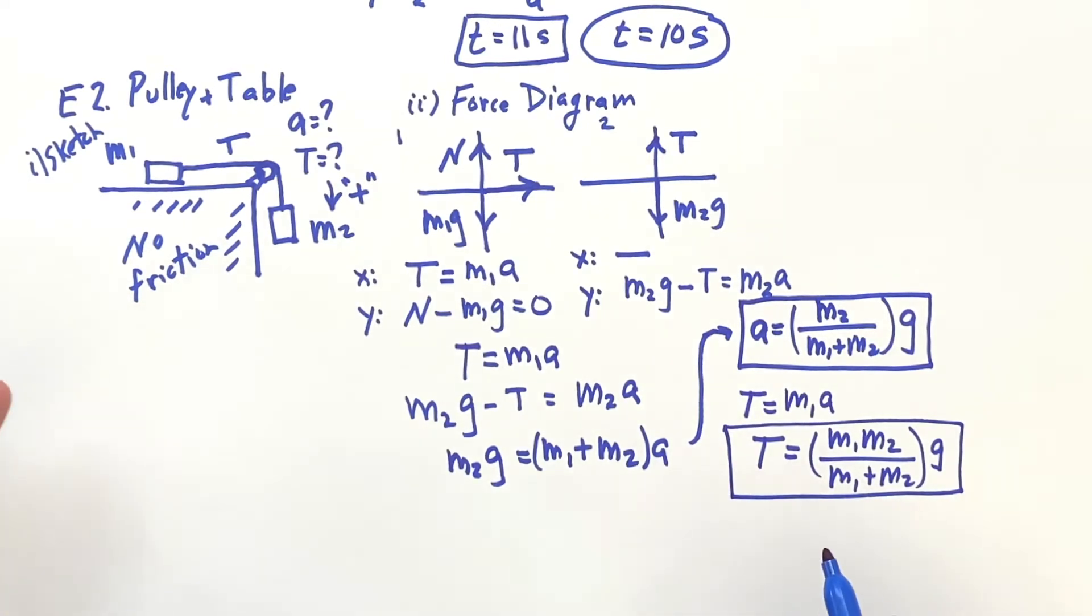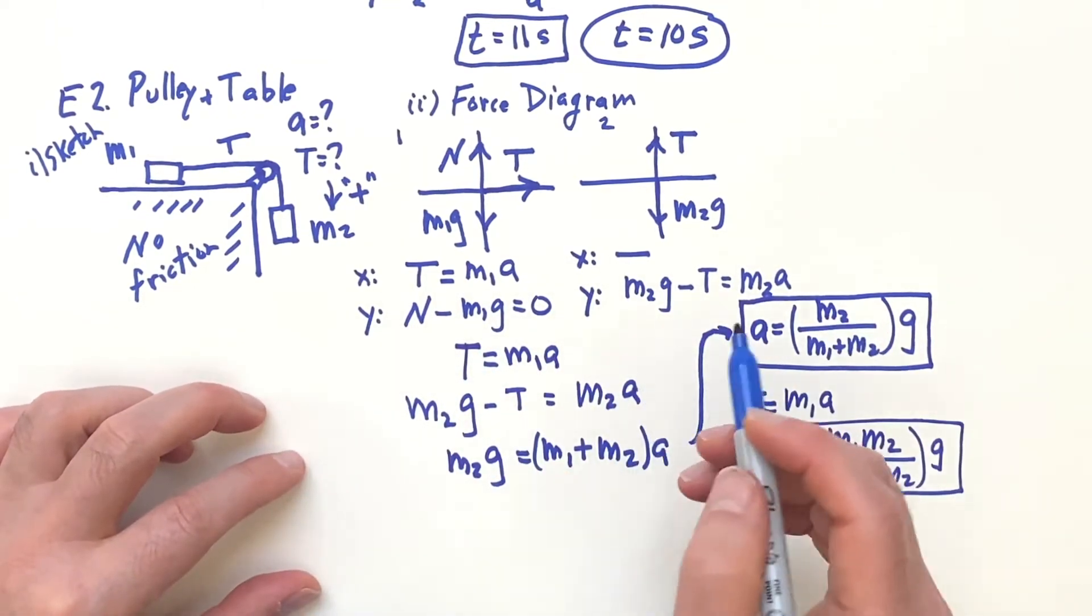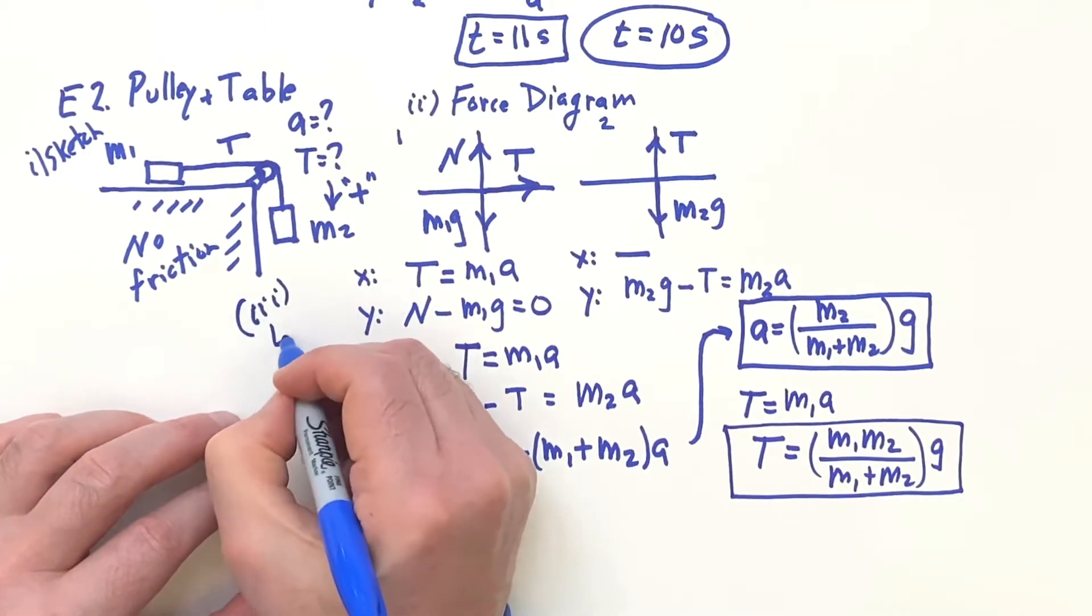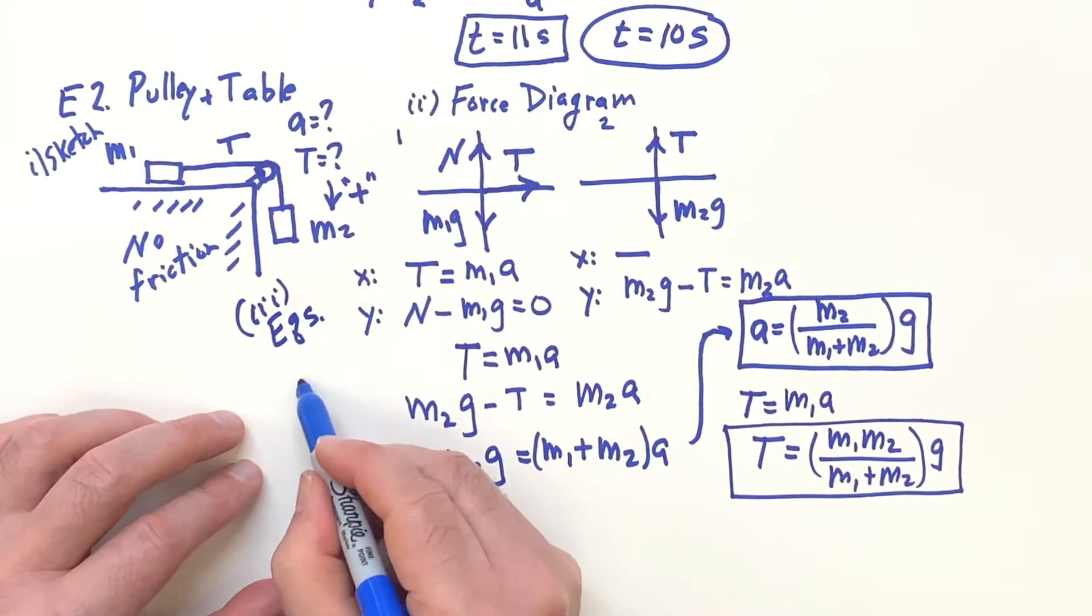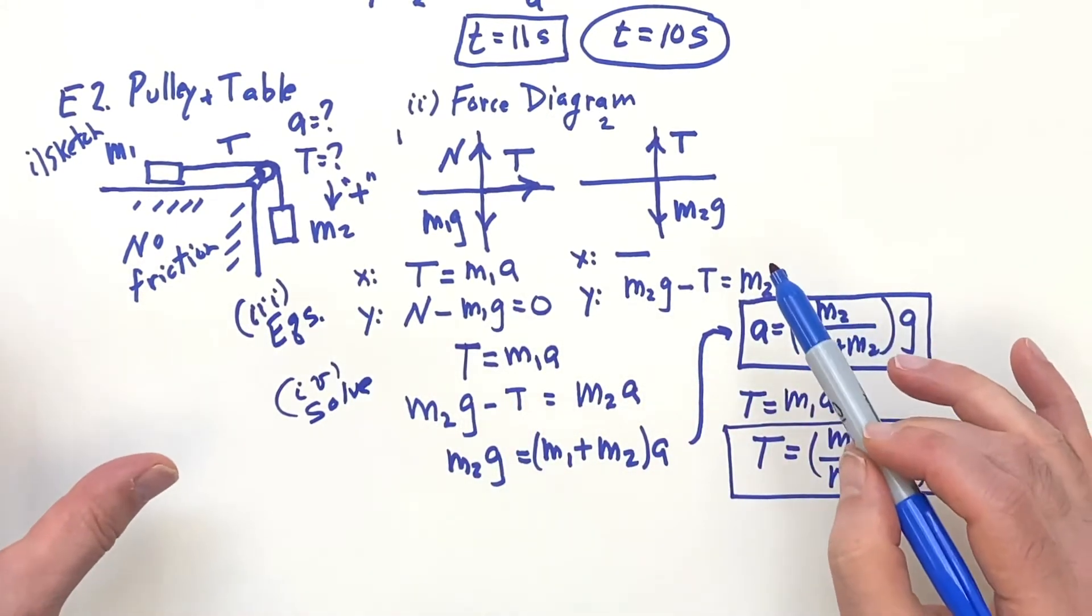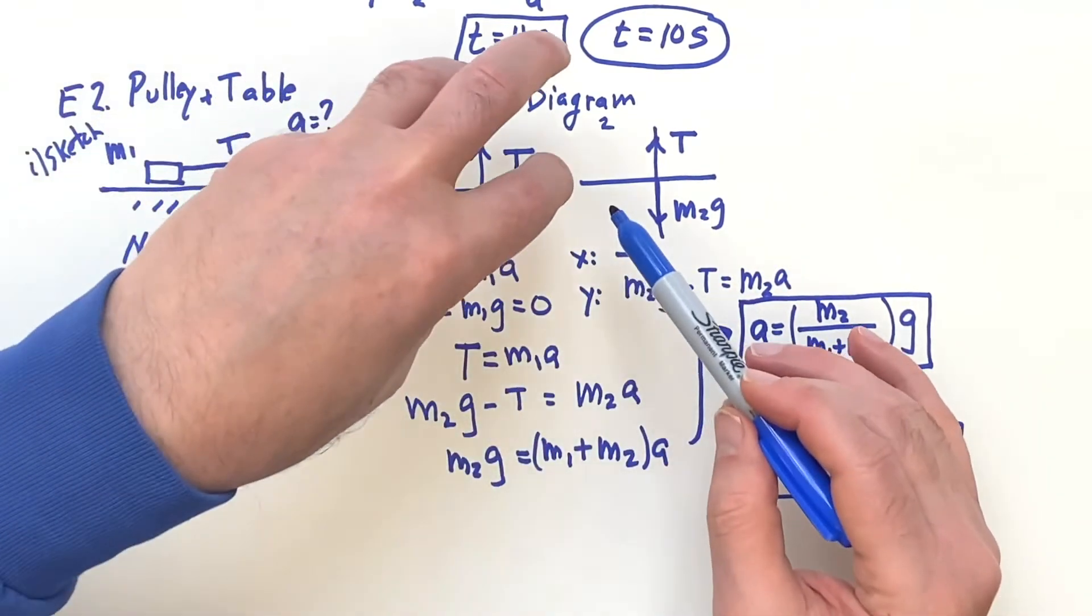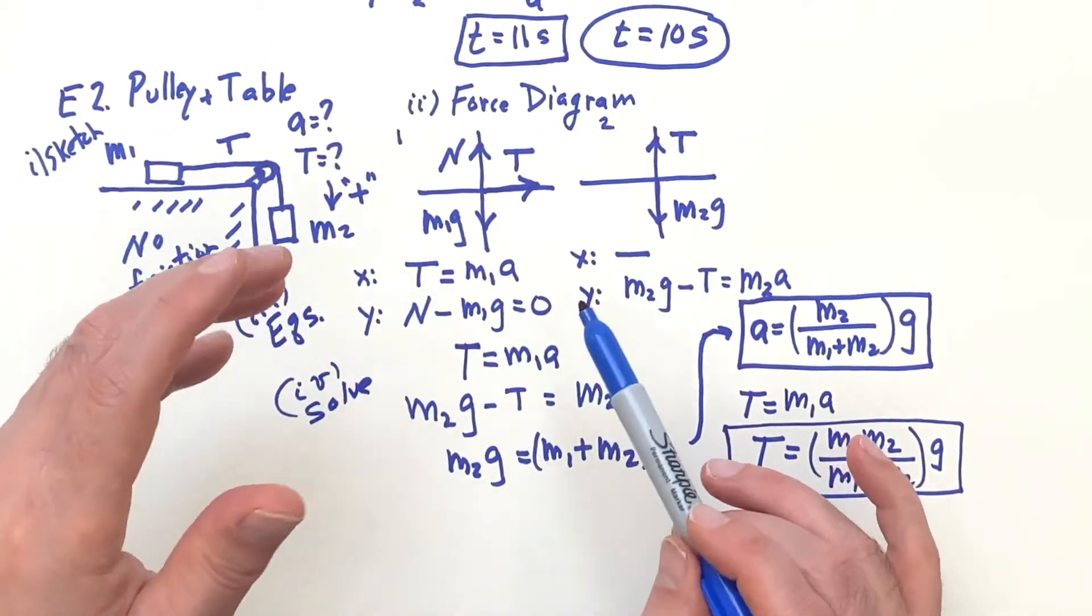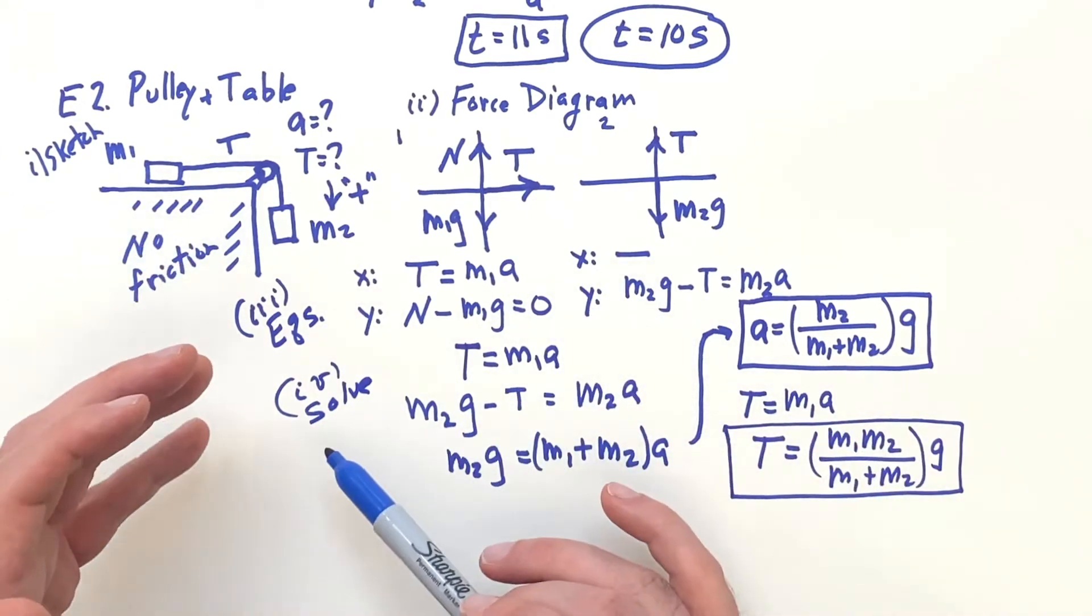But now remember, I like to think of these problems. Let me go ahead and label the parts. We have here the equations. That's three. And then we had step four is the solve. So when I think of these problems in statics and dynamics, I'm thinking a sketch. I'm thinking a force diagram. I'm thinking equations. Here are the equations of motion in dynamics or equations of equilibrium. And then here I solve.